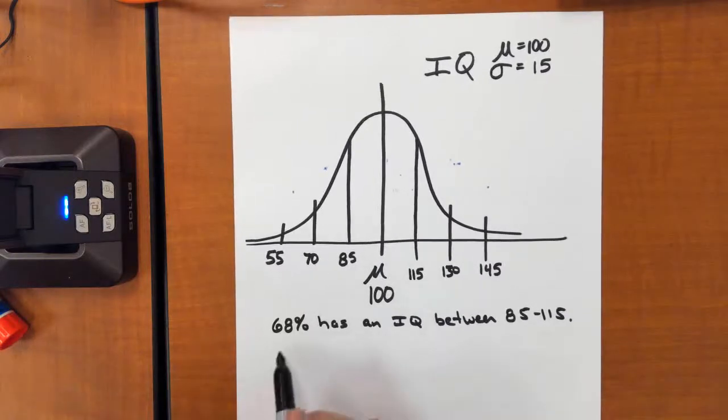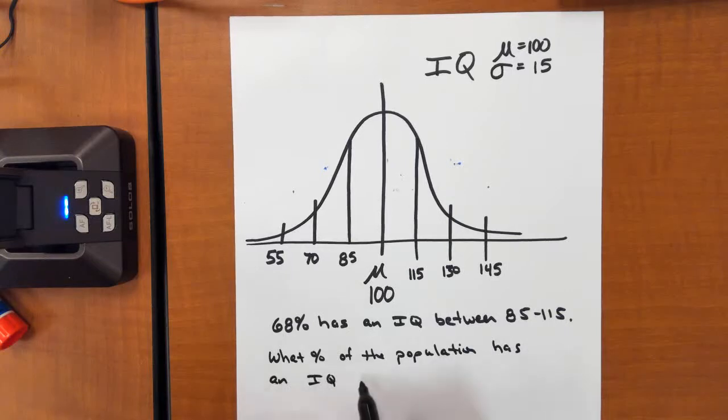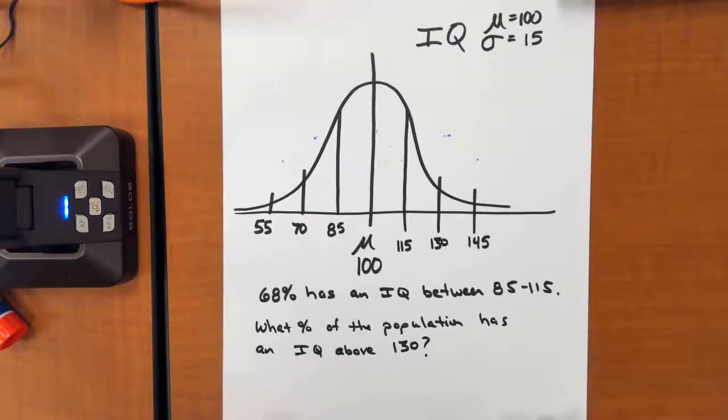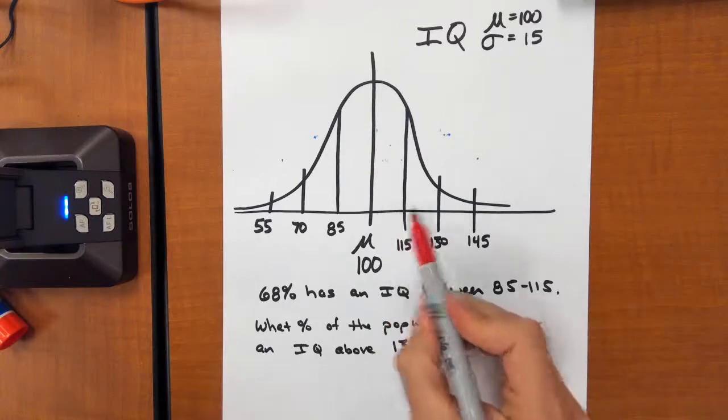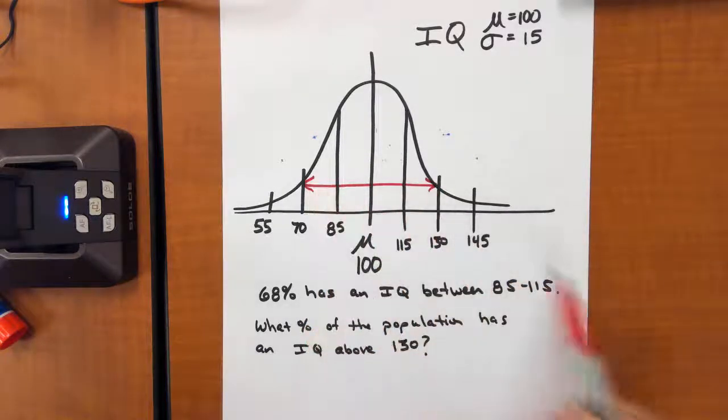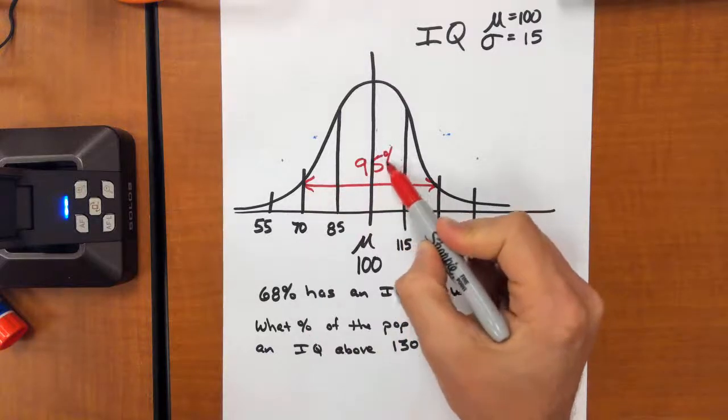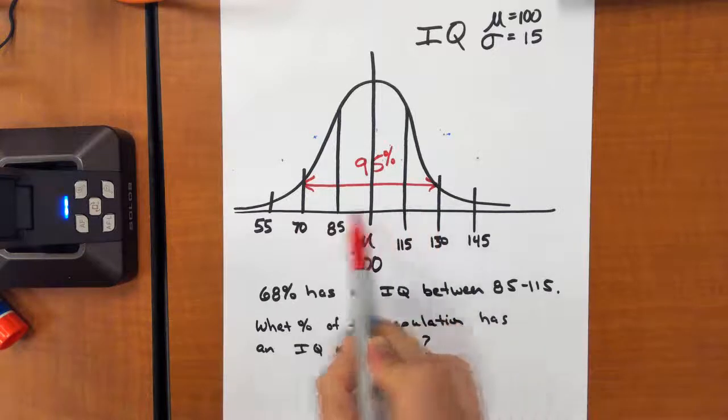We could answer some other questions like what percent of the population has an IQ above 130? Let's try to figure that out. Well, we said that within two standard deviations, where I see the 130, two standard deviations above, that that was going to be 95% of the data.